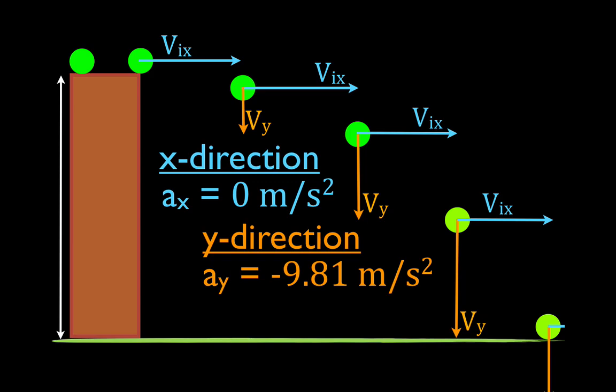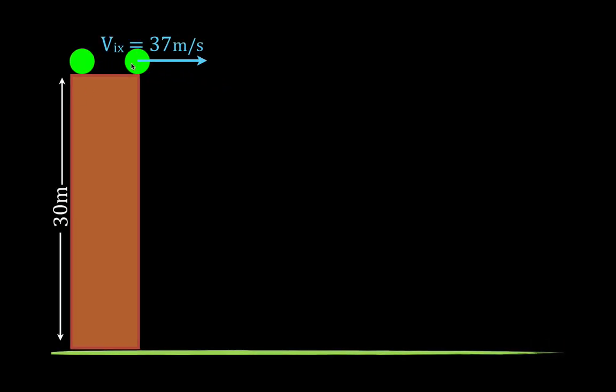In today's video I'm going to go over a qualitative description of two-dimensional projectile motion when an object is projected from a known height with a known initial velocity. We have an object that is projected from a height of 30 meters with a known initial velocity of 37 meters per second. When it leaves that surface, the object is going to follow this parabolic path. One thing we want to understand is why does it follow that parabolic path?